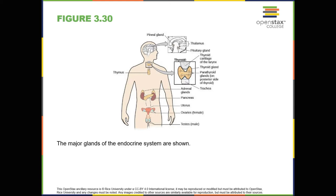The adrenal glands sit atop our kidneys and secrete hormones involved in the stress response, such as epinephrine, or adrenaline, and norepinephrine, or noradrenaline. The pancreas is an internal organ that secretes hormones that regulate blood sugar levels: insulin and glucagon. These pancreatic hormones are essential for maintaining stable levels of blood sugar throughout the day by lowering blood glucose levels — insulin — or raising them — glucagon.